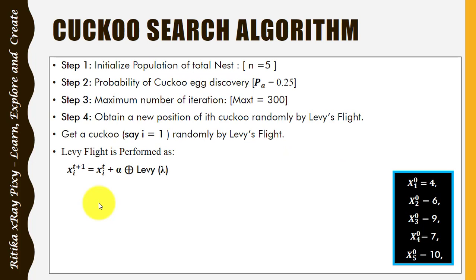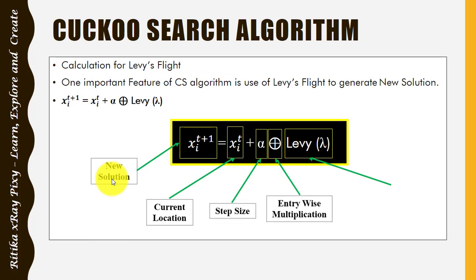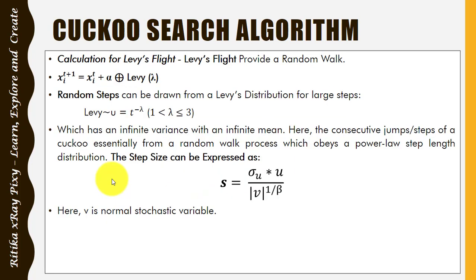The next step is to obtain the new position for the i-th cuckoo. We will select a cuckoo randomly and obtain a new position using Lévy flight. I will choose the first cuckoo, so i = 1. We perform Lévy flight using this equation: the new solution equals the current location plus step size multiplied entry-wise by the Lévy exponent.